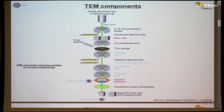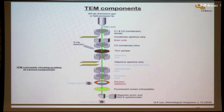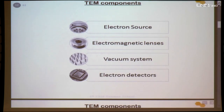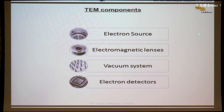Here is a block diagram of a TEM. We can divide the entire TEM into four main parts: first, the electron source; second, electromagnetic lenses; third, the vacuum system; and fourth, electron detectors. If we understand all these four important parts, it is very easy to understand how the TEM works and how to analyze any samples in the TEM.